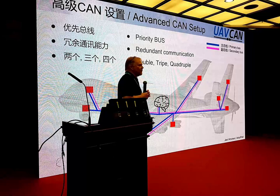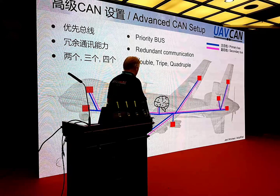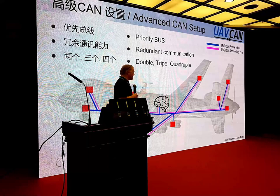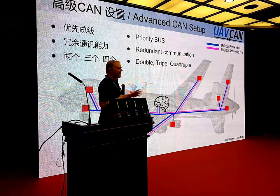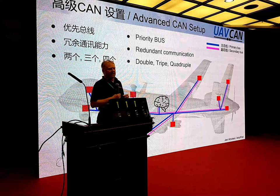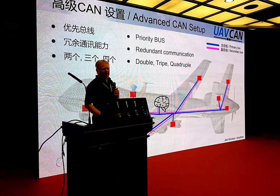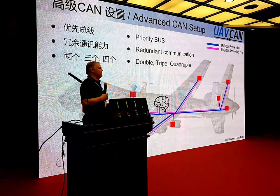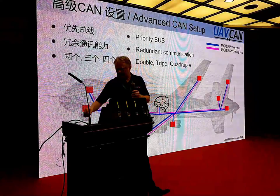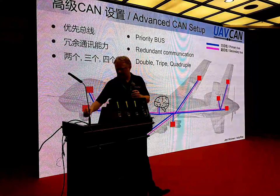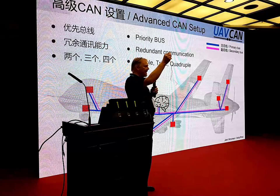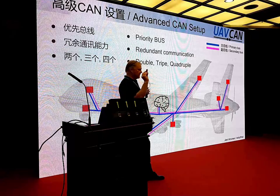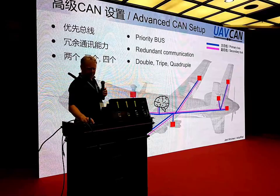Another nice thing on CAN systems is that we can have multiple CAN buses running on the same devices. We can have priority lines. Let's say we have a light system, which is not so important — that can be on the secondary CAN bus. But servos and others, which are always important, are on the primary bus. But they can also listen to the secondary if we have a malfunction on the primary bus. We can have two, three, four, even more. Pavel — the original author of UAV CAN — his GPS already has two totally separate buses, so if one fails, the other still works.